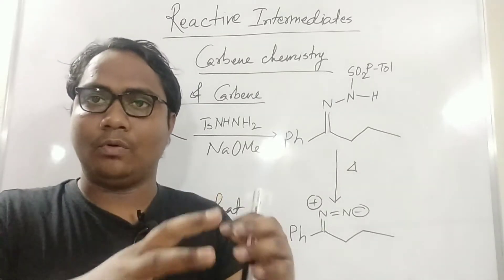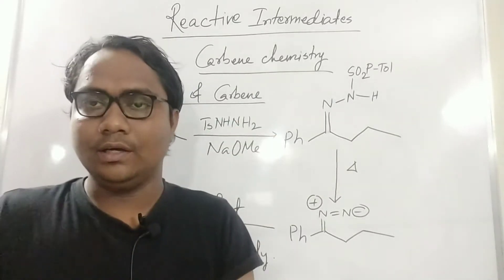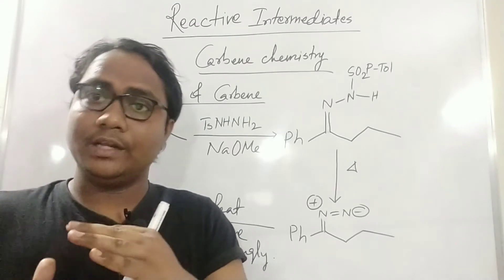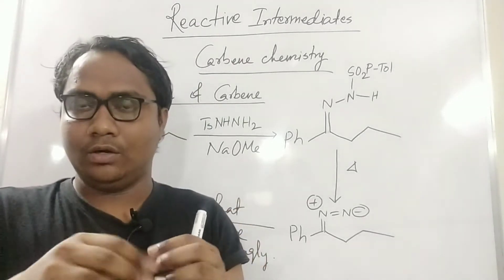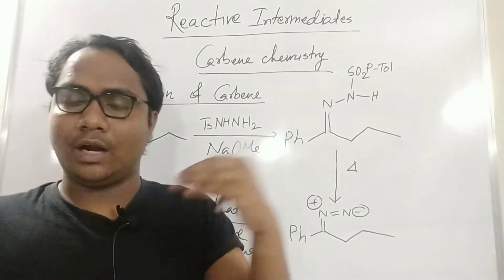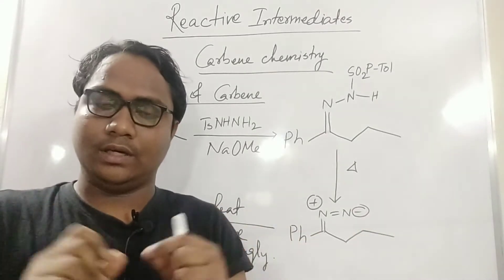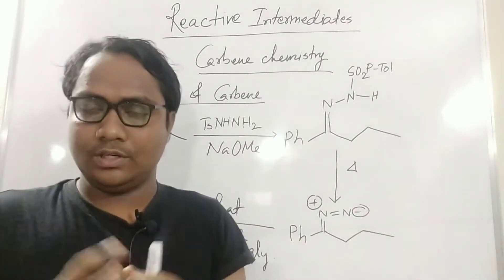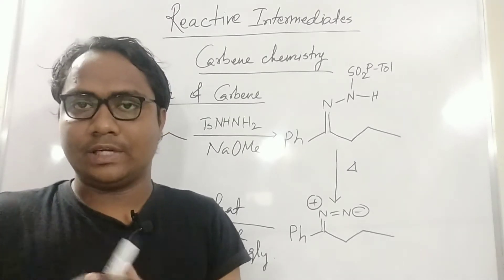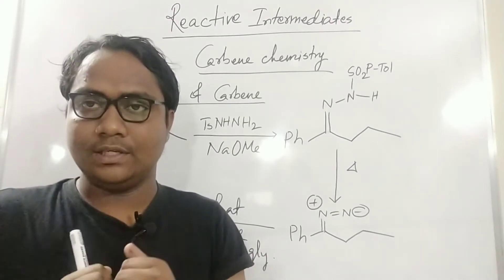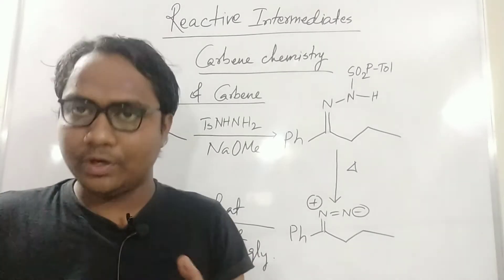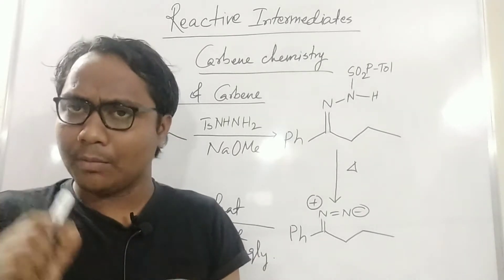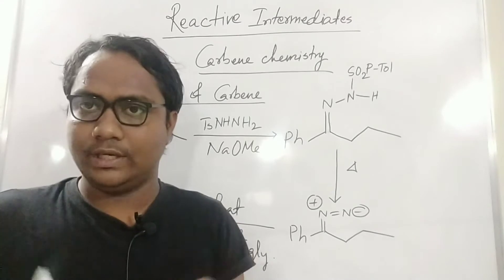In a reaction, carbene will generate and its lifetime is very short. Scientists will trap this intermediary. There are many more intermediaries you already know: radicals, nitrates, carbocations, carbanions, and carbene. Carbene is not a negative charge, not a positive charge, not a radical — it is something different.